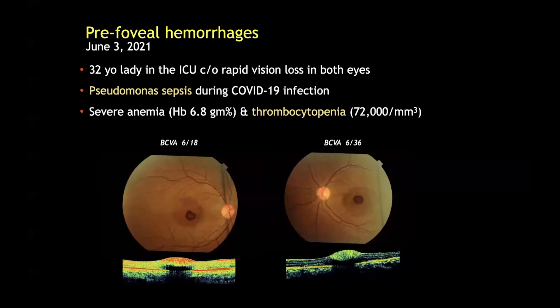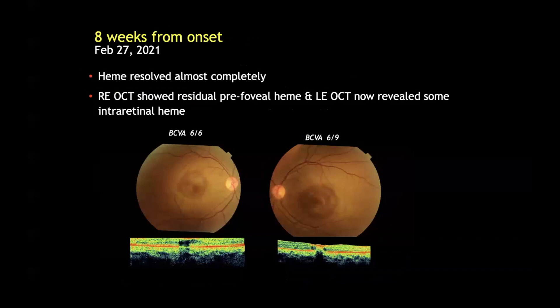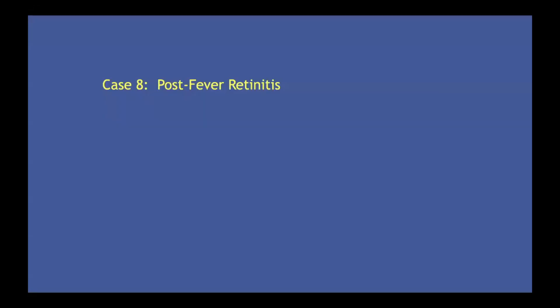In June this year, there was a 32-year-old lady who complained of sudden deterioration of vision in both eyes due to pre-foveal hemorrhages. She had Pseudomonas sepsis contracted during her COVID infection, and at this time she had severe thrombocytopenia. Eight weeks from onset, the pre-foveal hemorrhages had resolved completely with visual improvement.